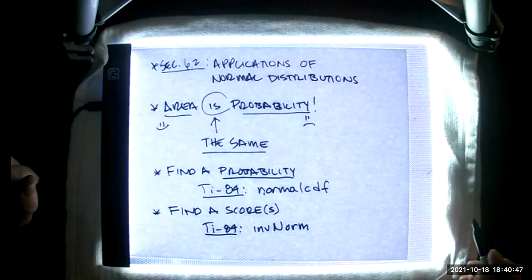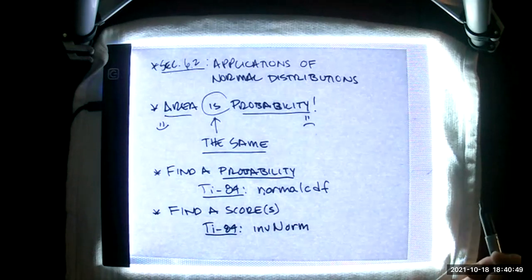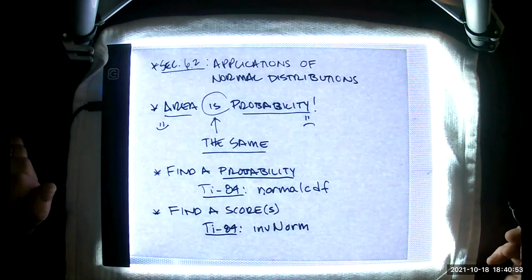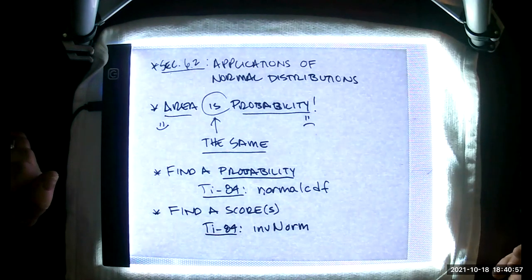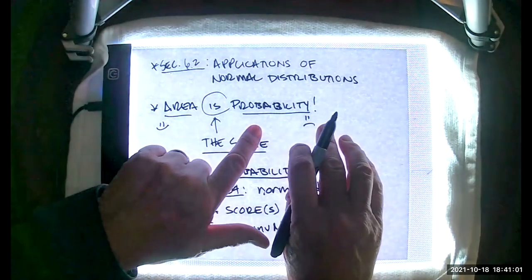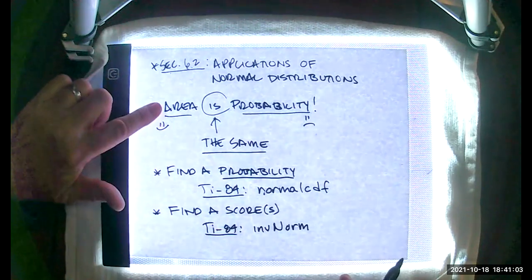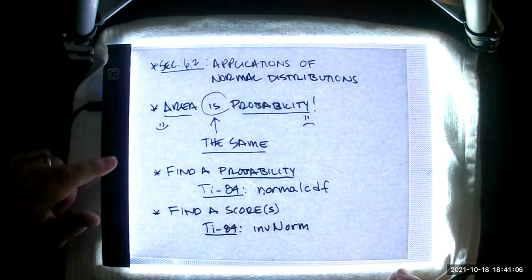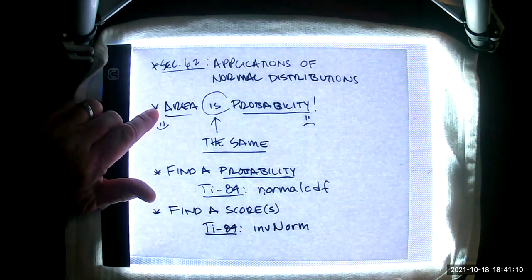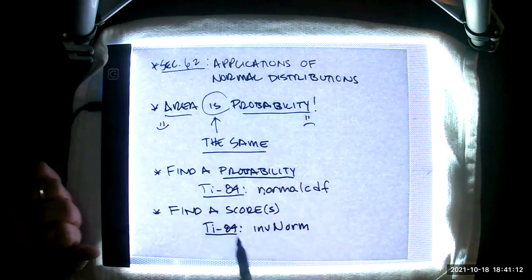All right. This is section 6.2, applications of normal distribution. And thanks to Naomi, we're recording tonight. Area is probability. This is a fundamental notion we developed in 6.1. They are literally the same. We cannot calculate probability directly. We can measure area directly. Sometimes the tools are fancy, but we can do that. And our calculator is actually quite good at this.